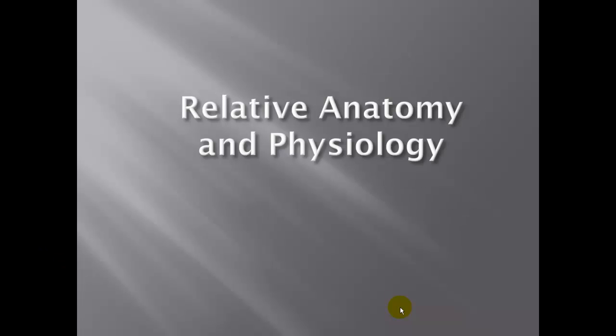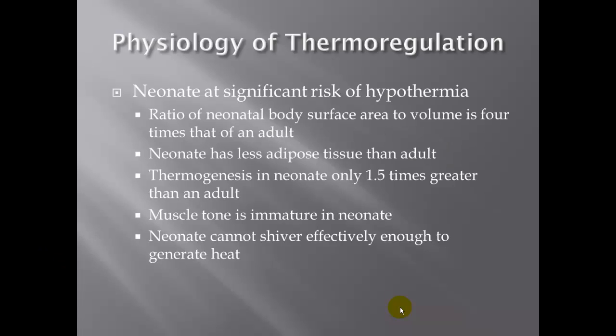We're going to talk about anatomy and physiology and the differences. Regarding thermoregulation, neonates are at significant risk for hypothermia. The ratio of neonate body surface area to volume is four times that of an adult. Neonates have less adipose tissue, and their ability to generate heat or thermogenesis is only about one and a half times greater than an adult, with immature muscle tone.